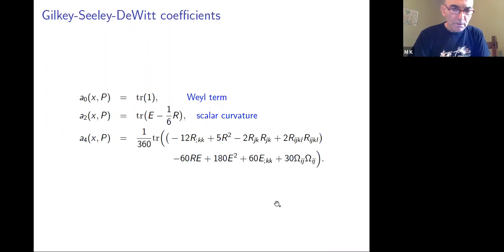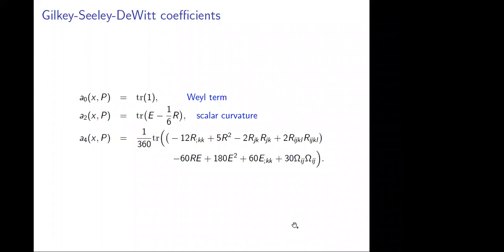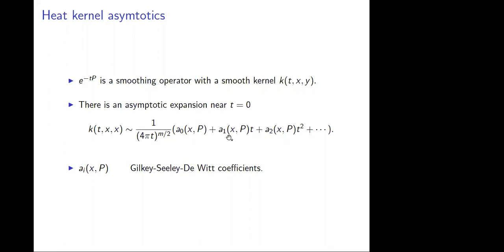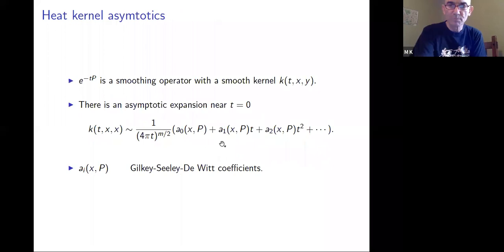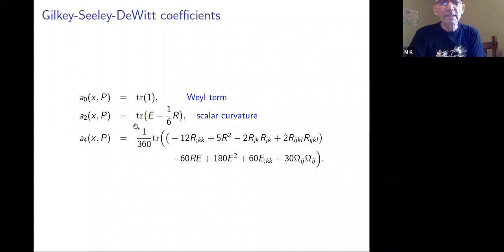There is a confusion about the enumeration of the A's. In Gilkey's counting, what I called A_1 would be A_2, and what I called A_2 would be A_4. There is a problem with my notation — thank you for pointing that out. Only even-indexed terms appear in one way of counting. So the fourth formula is not very useful for us, but the first two are extremely useful.